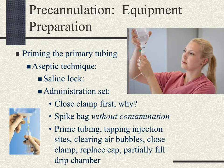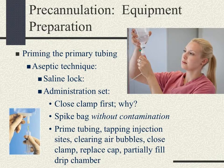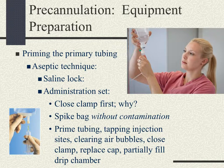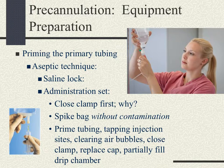Carefully spike the bag so that you do not contaminate it, paying special attention to the ports and hubs where the piercings will be. Prime the tubing. Tap all the injection sites to clear any air bubbles, make sure the clamps are closed, replace the cap, and partially fill the drip chamber by squeezing it gently to ensure there is no air in that drip chamber.